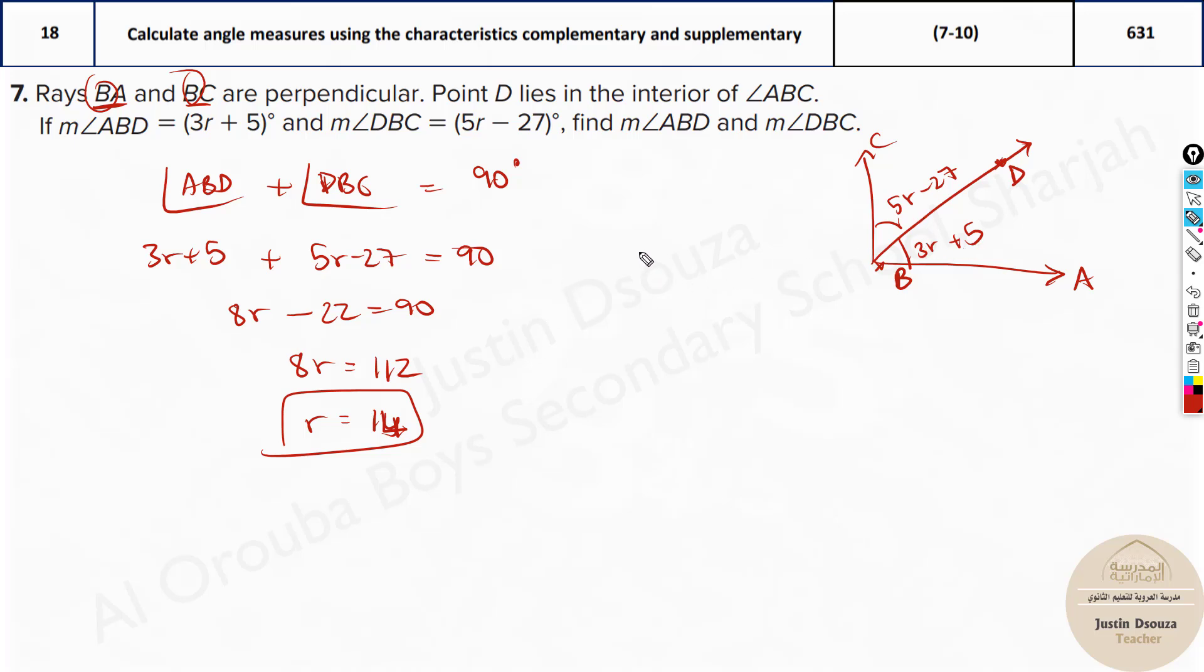Now you can easily find all these angles. So measure of angle ABD would be 3r + 5, that is 3 times 14 plus 5. And you can just multiply this. It will be 14, 28, 42 plus 5, it's 47 degrees. Now if you know one is 47, then the other one can be easily found out by subtraction, 90 minus 47, or you can do this over here.